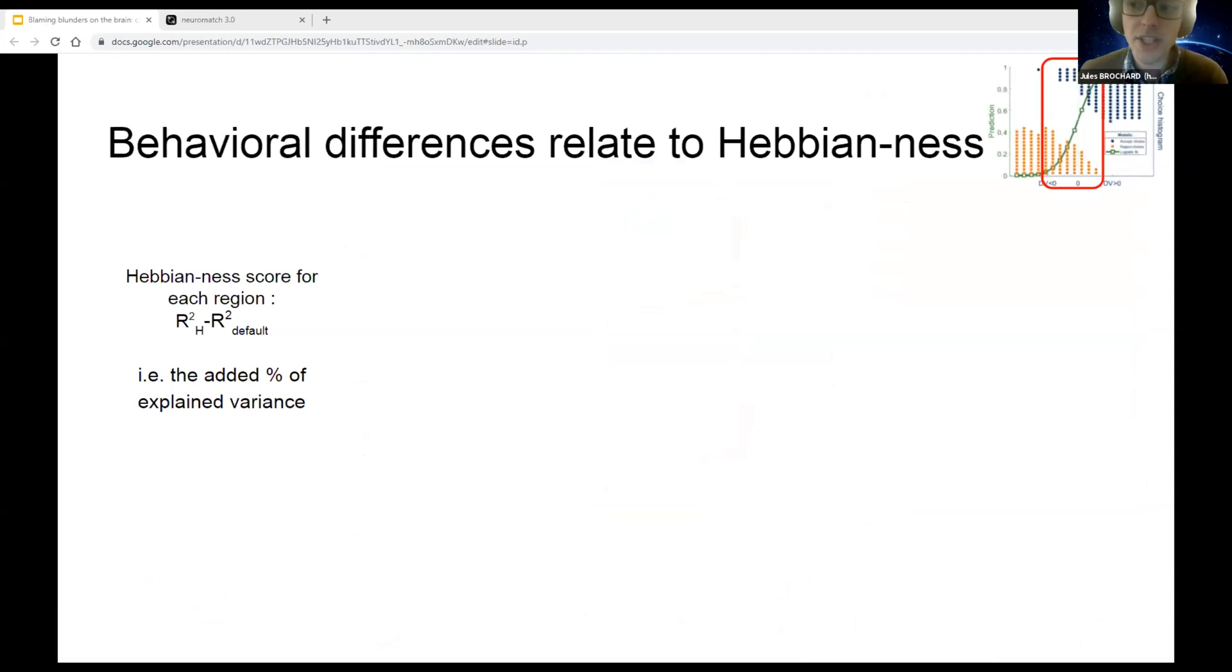Then we tried to see if we could go a bit further and explain behavioral differences between the subjects, more precisely the choice inconsistency of the subject. So typically there are decisions that go against the logistic model prediction.